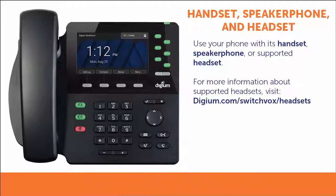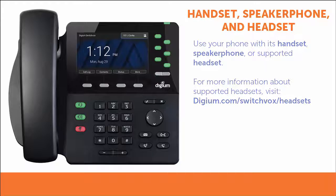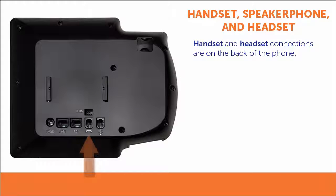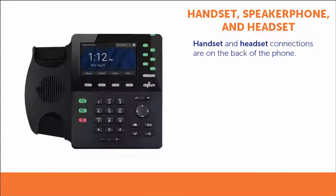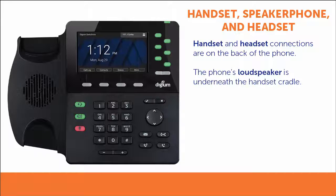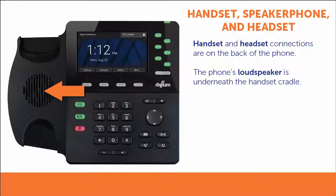Your phone can be used with its handset, the speakerphone, or with a separate headset. For more information on supported headsets, please visit the Digium website. The handset and headset connections are located on the back of the phone. The phone's loudspeaker for hands-free and speakerphone operation is found underneath the handset cradle.